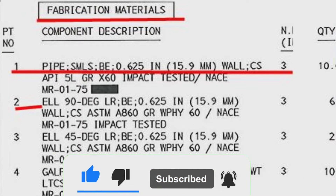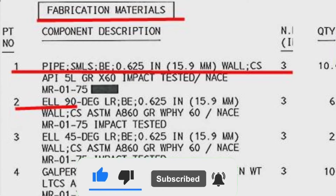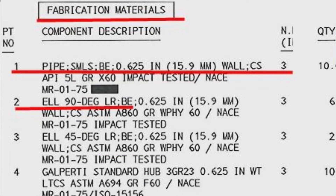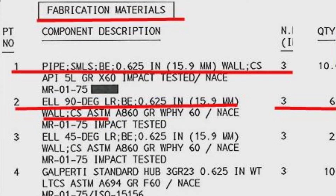Detail number 2 was used in several places in the pipe drawing. Item number 2 is elbow 90 degree, long radius, 0.625 inch — that is 15.9 wall thickness — the size is 3 inch, the material is carbon steel, and the quantity is 6 pieces.